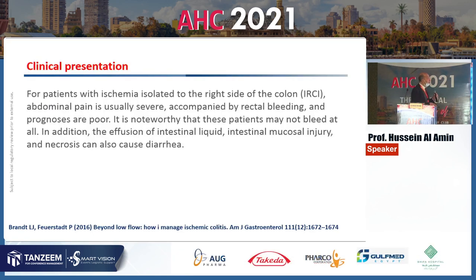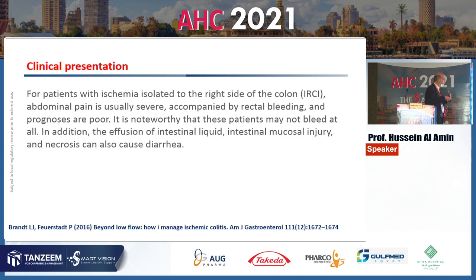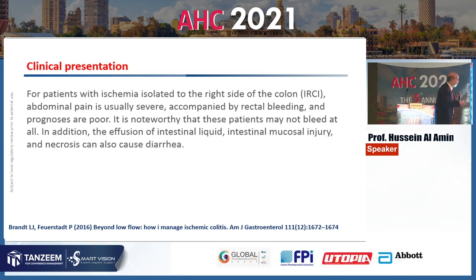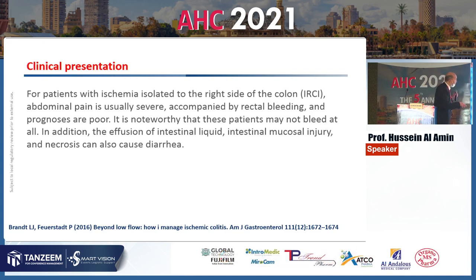Isolated right colonic ischemia is a critical site of affection because the collateral circulation is less developed in the right colon. This can present with severe abdominal pain without rectal bleeding or diarrhea, requiring a high index of suspicion for early diagnosis to avoid complications.